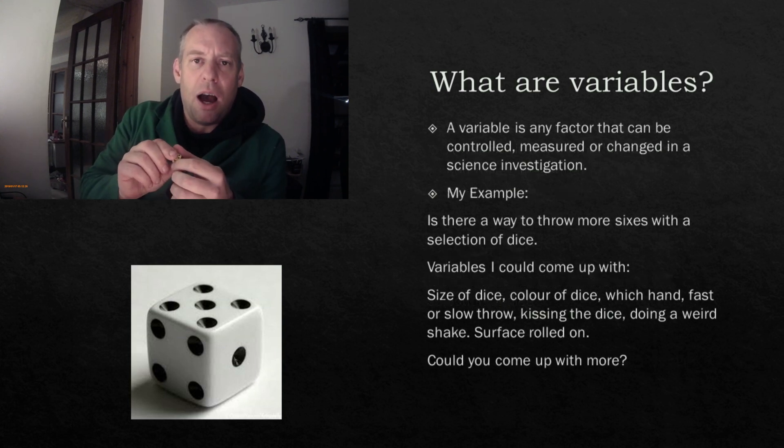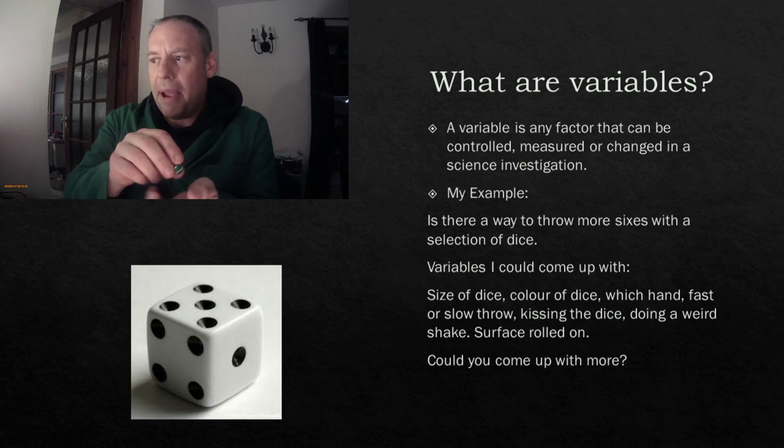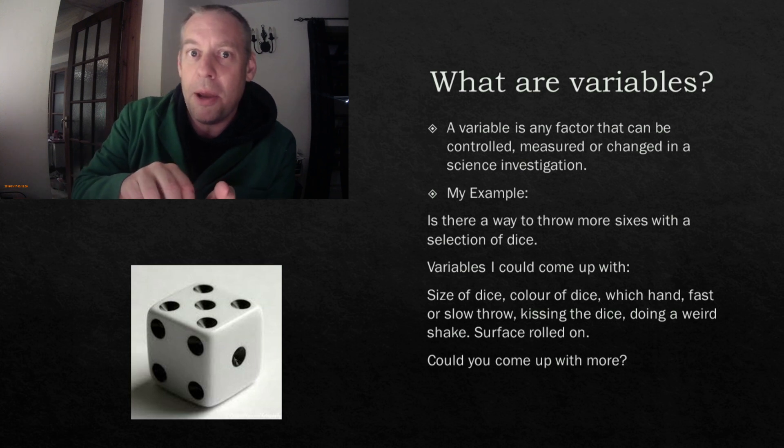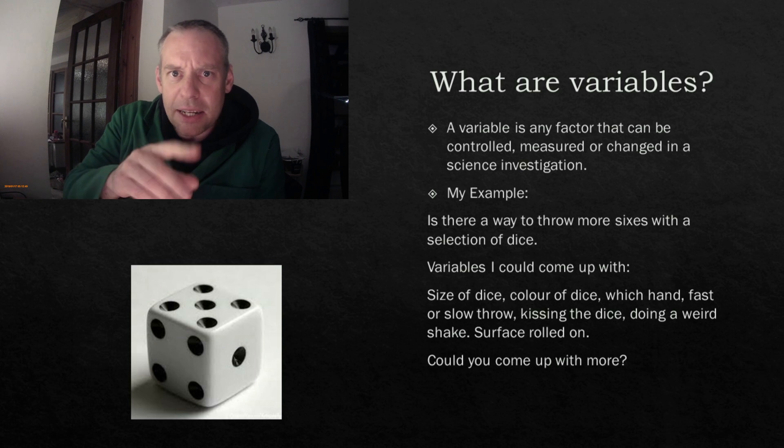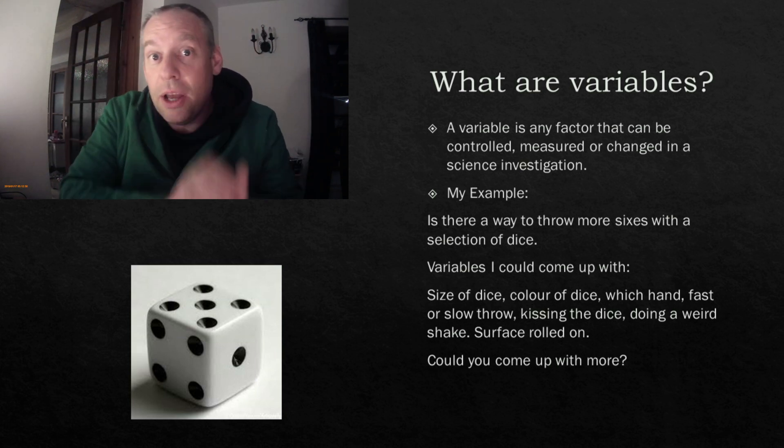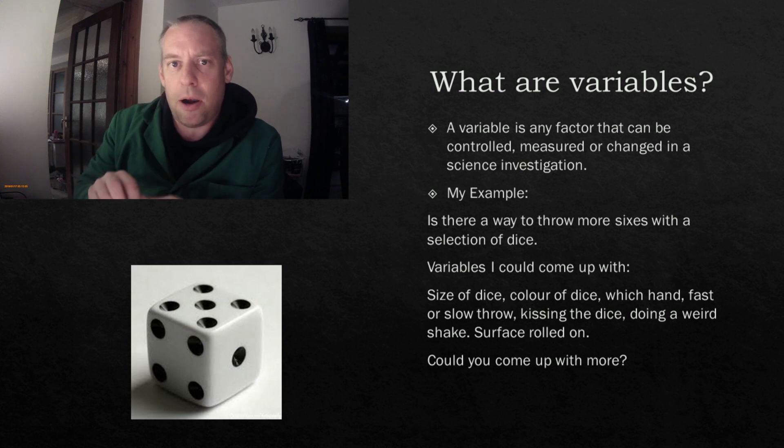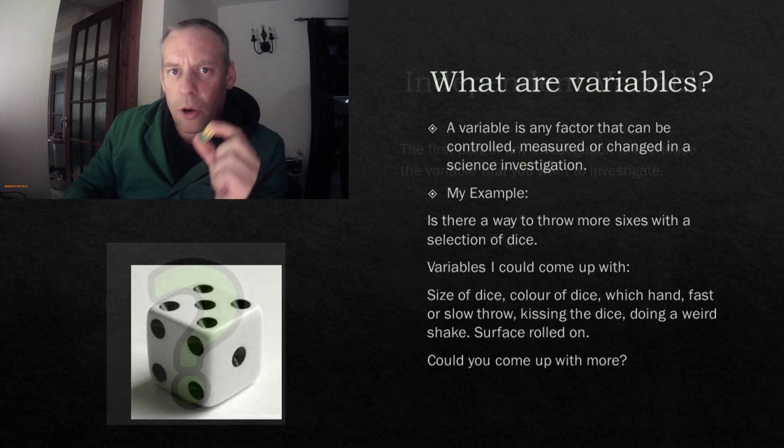So the kind of things I was coming up with are maybe if I use a bigger dice that might give me more sixes. Maybe the colour of the dice makes an effect. Maybe green ones are better than the other ones. My children certainly think so. Maybe if I do a fast throw or a slow throw, maybe that'll affect it. I know some people that roll it and kiss the dice before they throw it. Maybe that's scientifically proven to roll sixes. I've seen some people do all manner of shakes. They do kind of round around the head and then roll. So there are a whole load of different experiments and variables I can come up with in order to investigate whether I can get sixes. So those are all variables.